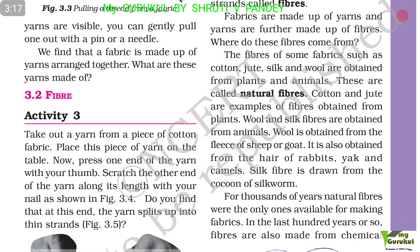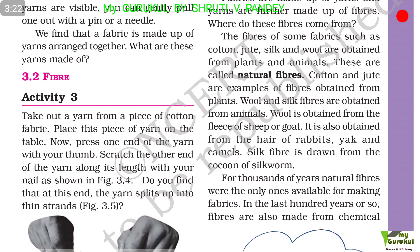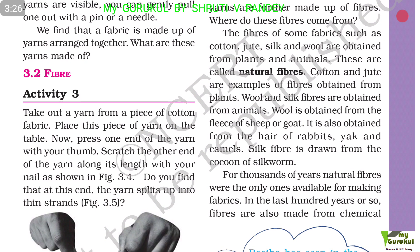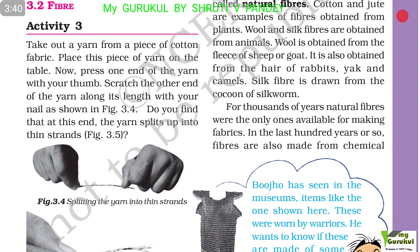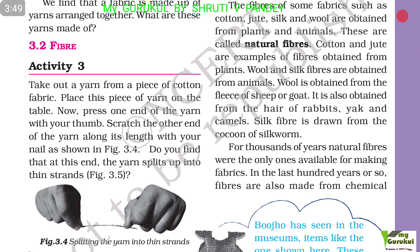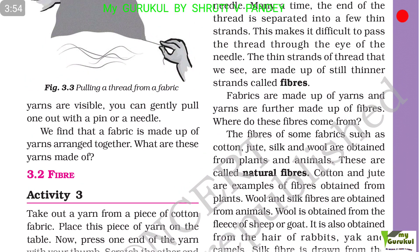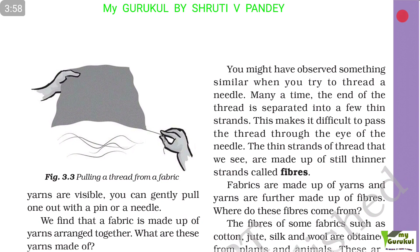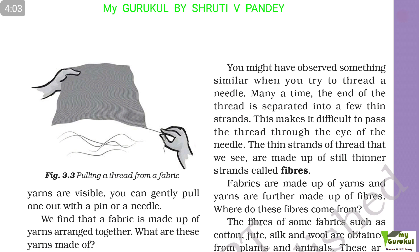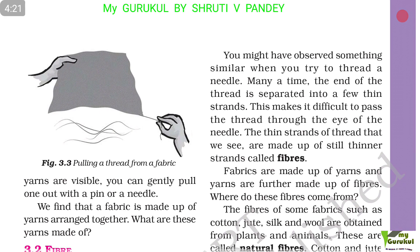What are these yarns made of? Fibers! Activity 3: Take out a yarn from the piece of cotton fabric. Place this piece of yarn on the table. Press one end of the yarn with your thumb, then scratch the other end of the yarn along its length with your nail. You will find that the yarn splits up into thin strands. You might have observed something similar when threading a needle — the end of the thread separates into thin strands, making it difficult to pass through the eye of the needle. These thin strands are made up of still thinner strands called fibers. Fabrics are made up of yarns, and yarns are further made up of fibers.